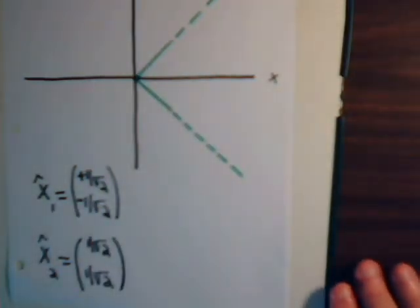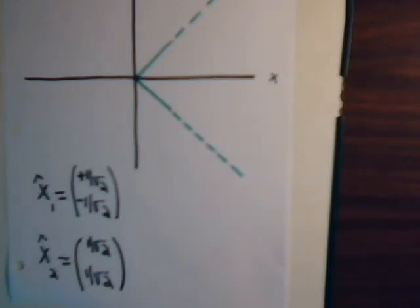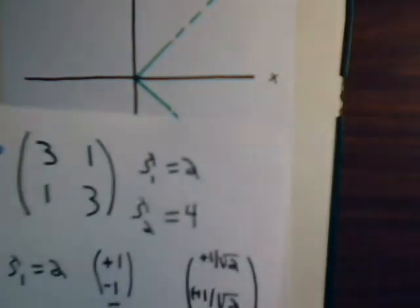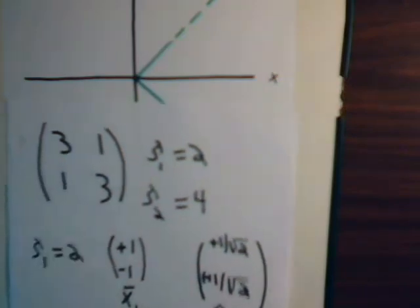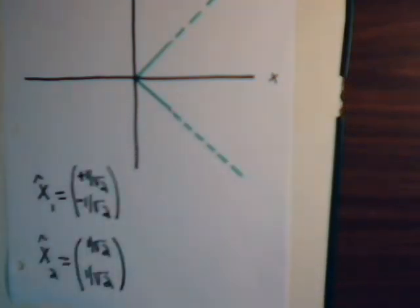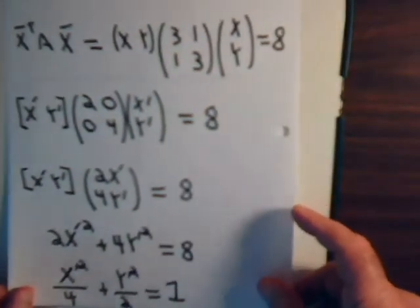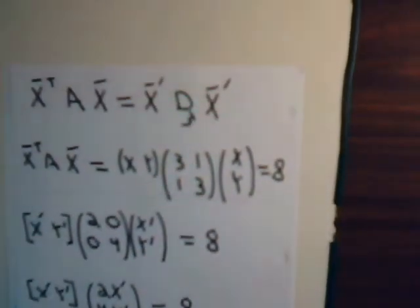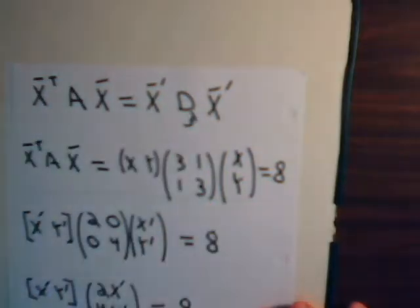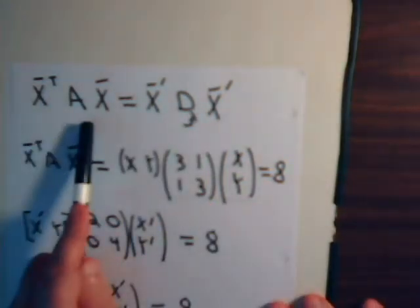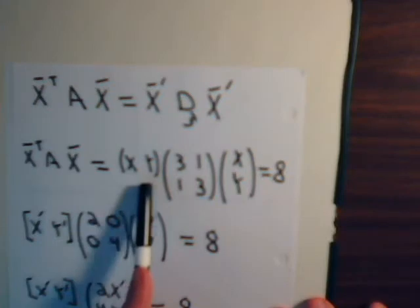So, here are the two unit eigenvectors for our symmetrical matrix 3, 1, 1, 3. Now, what we want to do is pick up where we left off in the last video. We had, we derived this equation. And now, our general quadratic form is this equation right here.